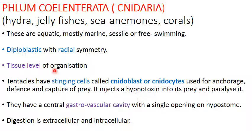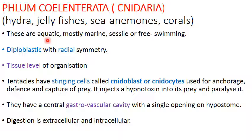Coming to the next group — Phylum Cnidaria, also called Nidaria. This phylum includes Hydra, jellyfish, sea anemones, and corals. Most are aquatic and can be marine. Some are free-swimming and marine, while Hydra is an example of a freshwater cnidarian. Some are sessile — staying in one place — while others are free-swimming.